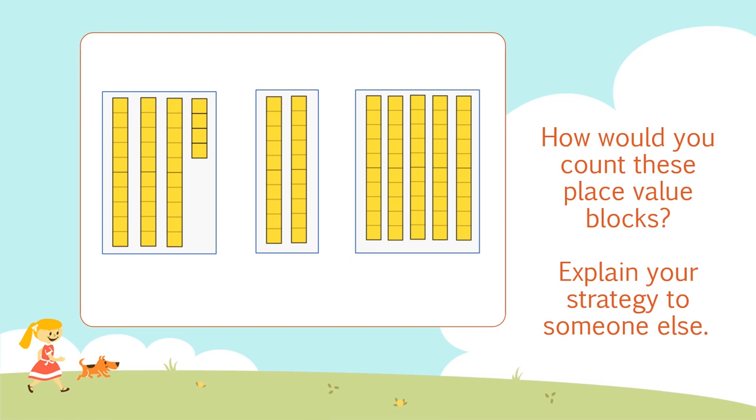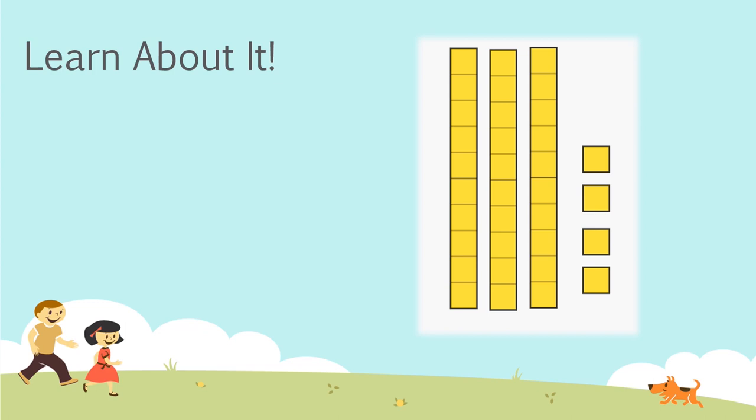Let's start off by taking a look at a few representations. How would you count these place value blocks? Explain your strategy to someone else. As you're looking at these three images, think about what you know about tens and what you know about ones. When adding and subtracting two-digit numbers, it's often easier to rewrite the number in expanded form. Expanded form is when you write a number to show the value of each digit.